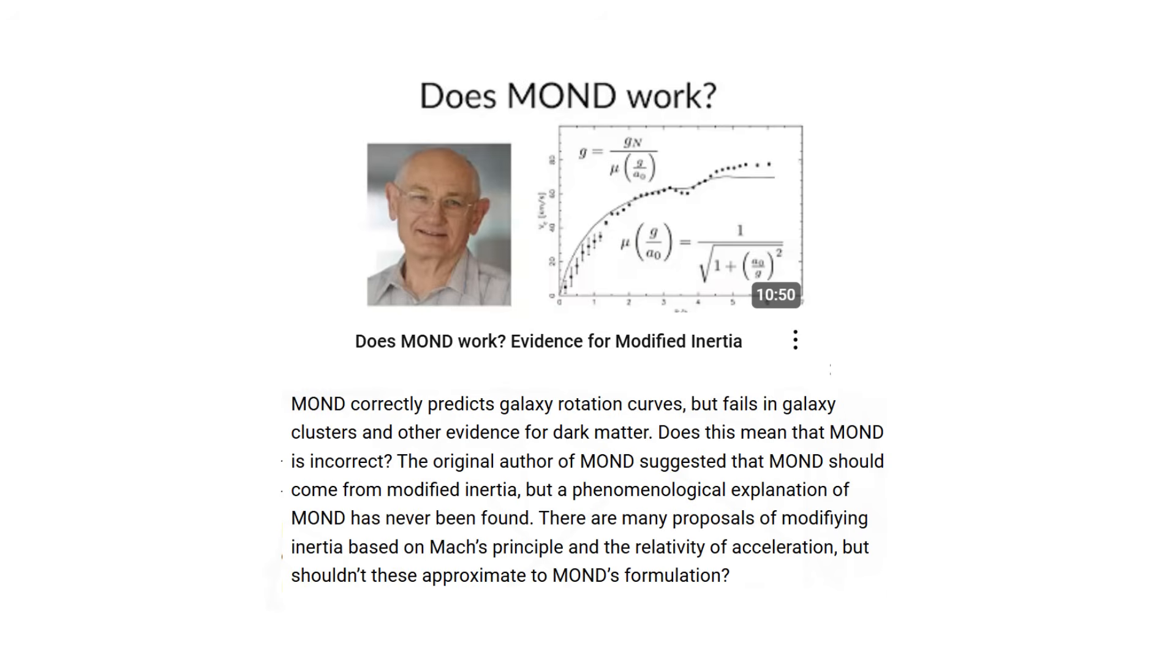Quantized Inertia attempts to phenomenologically explain the success of Modified Newtonian Dynamics, MOND. We explained MOND in a previous video, and how impressive it is that with a simple modification to Newton's law, one can predict the rotation curves of galaxies without the need for any physical dark matter, and with a single new constant.